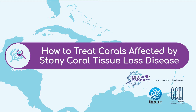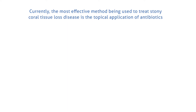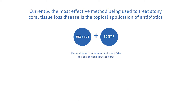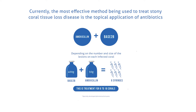How to treat corals affected by stony coral tissue loss disease. Currently, the most effective method being used to treat stony coral tissue loss disease is the topical application of antibiotics, specifically amoxicillin, using a specially developed pharmaceutical paste called Base2B. Depending on the number and size of the lesions on each infected coral, a 400 gram jar of Base2B mixed with 50 grams of amoxicillin will fill 6 syringes and treat between 6 to 18 corals. This video will demonstrate how to apply the Base2B amoxicillin mixture to corals that have been affected by stony coral tissue loss disease.